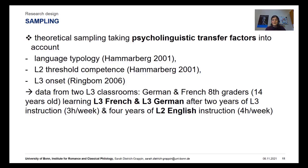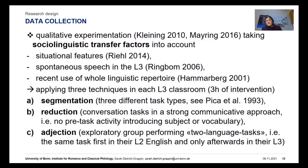In my aim to elicit these transfer-based practices, I had to take psycholinguistic transfer factors into account, such as language typology or psychotypology, an L2 threshold competence, and the onset in the L3. So I sampled 14-year-old pupils schooled in France and Germany after four years of L2 English and two years of L3 German and French instruction. Sociolinguistic transfer factors became important while choosing a research strategy. I opted for a qualitative experimentation using three different tasks, or as Kleining puts it, a segmentation technique.